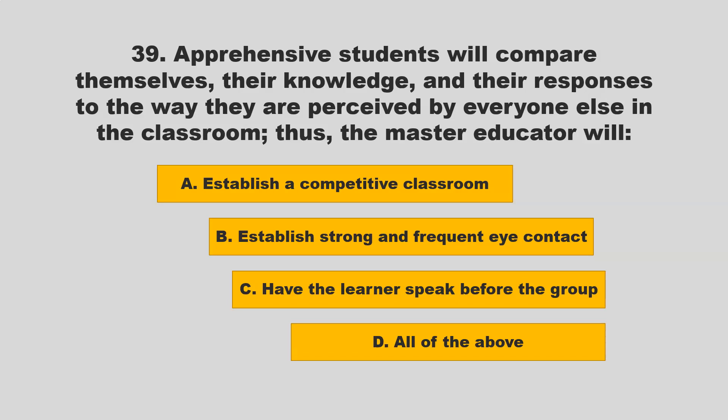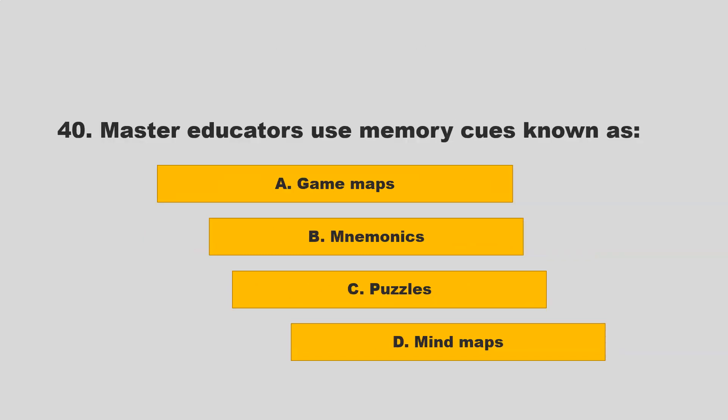Apprehensive students will compare themselves, their knowledge, and their responses to the way they are perceived by everyone else in the classroom. Thus, the master educator will: A) establish a competitive classroom; B) establish strong and frequent eye contact; C) have the learner speak before the group; D) all of the above. If you chose B — establish strong and frequent eye contact — you are correct.